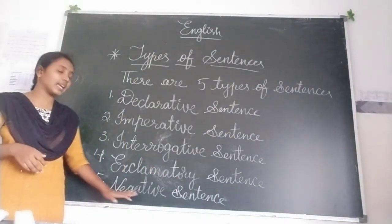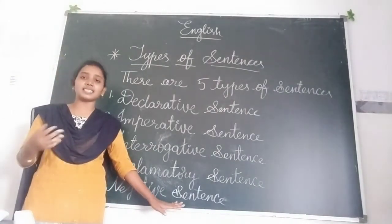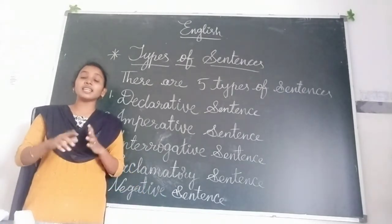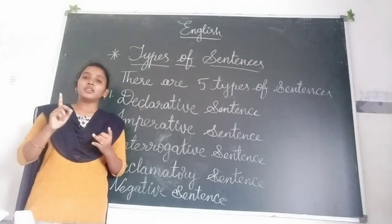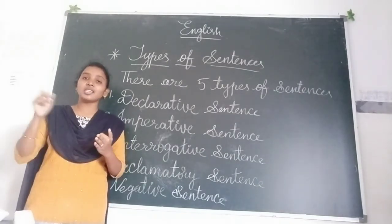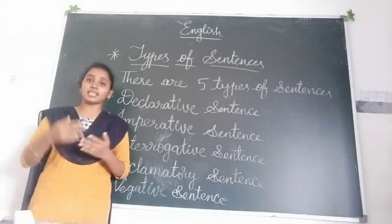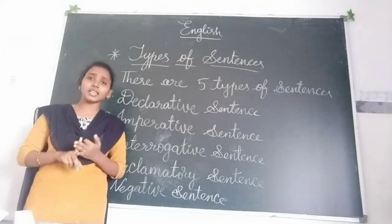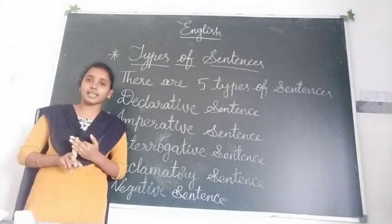And the last one: negative sentence. Do you already know positive and negative sentences? Negative sentence means in that sentence 'not' will be there. For example: 'Do not talk', 'He will not come', 'She is not playing' — in all of these, 'not' is there. These are negative sentences.